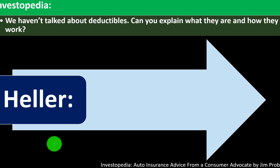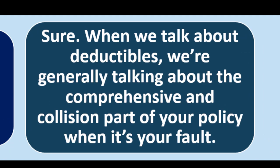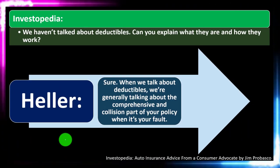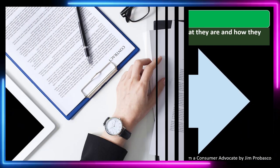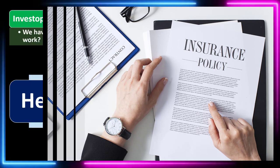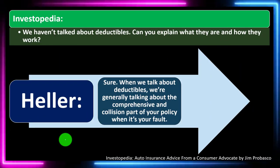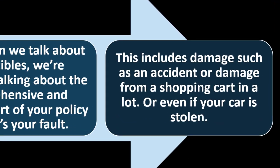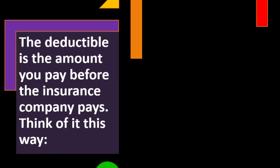Investopedia asking: we haven't talked about deductibles. Can you explain what they are and how they work? The expert Heller saying: when we talk about deductibles, we're generally talking about the comprehensive and collision part of your policy when it's your fault. This includes damages such as an accident, damage from a shopping cart in a lot, or even if your car is stolen. The deductible is the amount you pay before the insurance company pays.